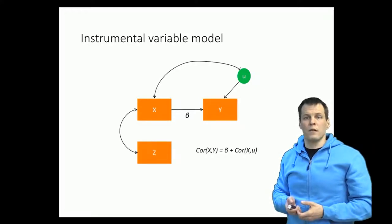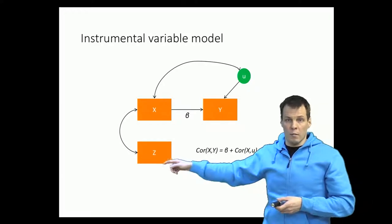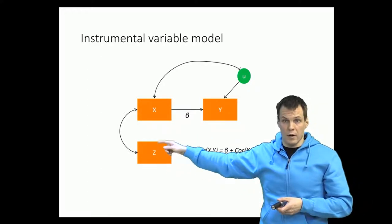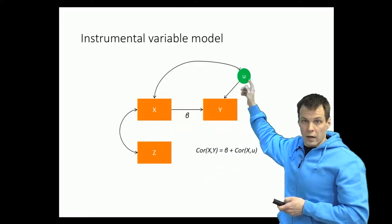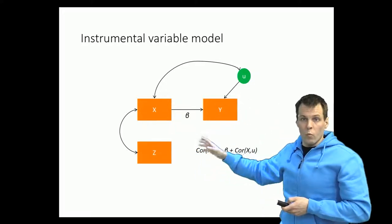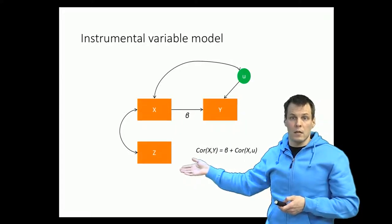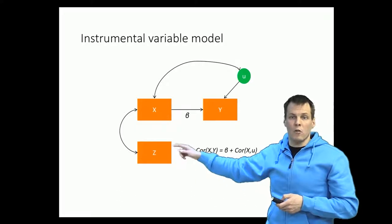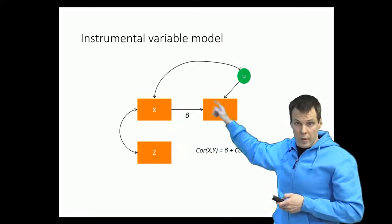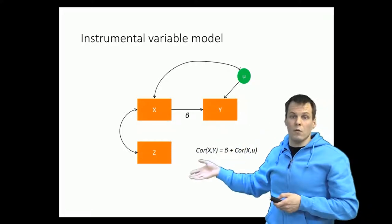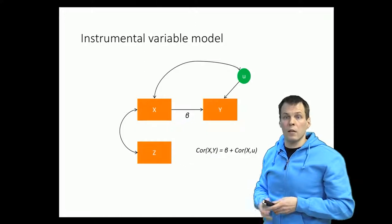The idea of an instrumental variable is that we get a third variable z that is correlated with x — a correlation that we can test empirically — and that we can assume is uncorrelated with u, any other causes. Finding these instruments is a difficult problem because we cannot generally test the correlation between z and u empirically; we have to argue that based on theory. I'll show you an example soon, but let's take a look at the principle first.